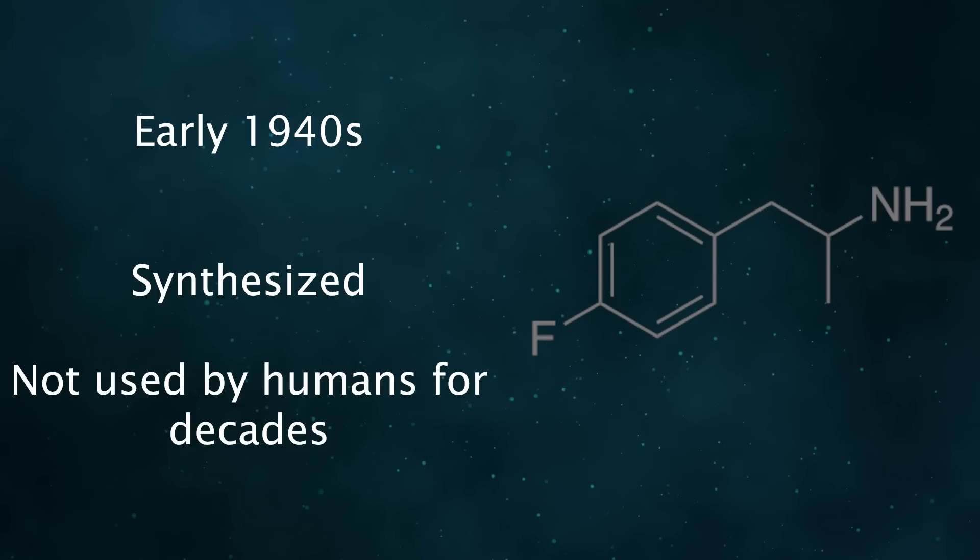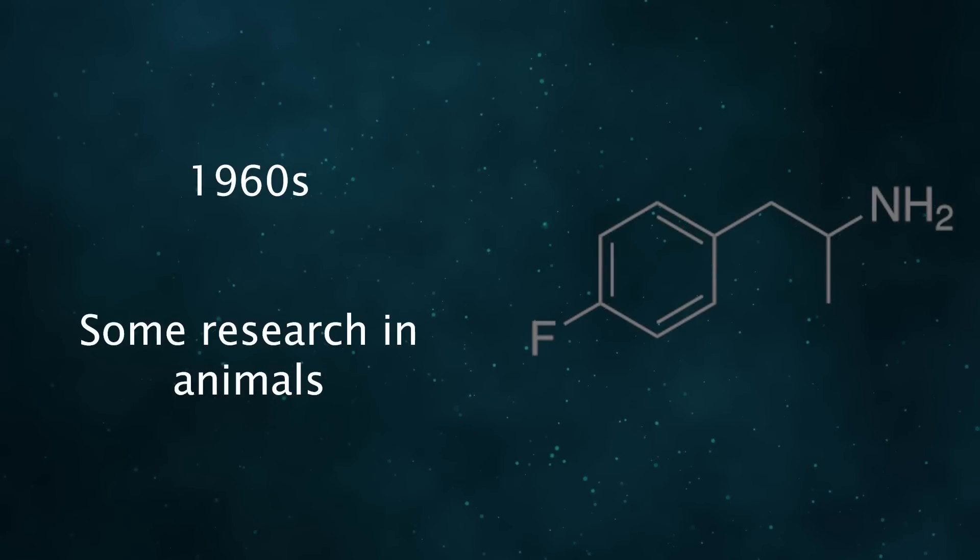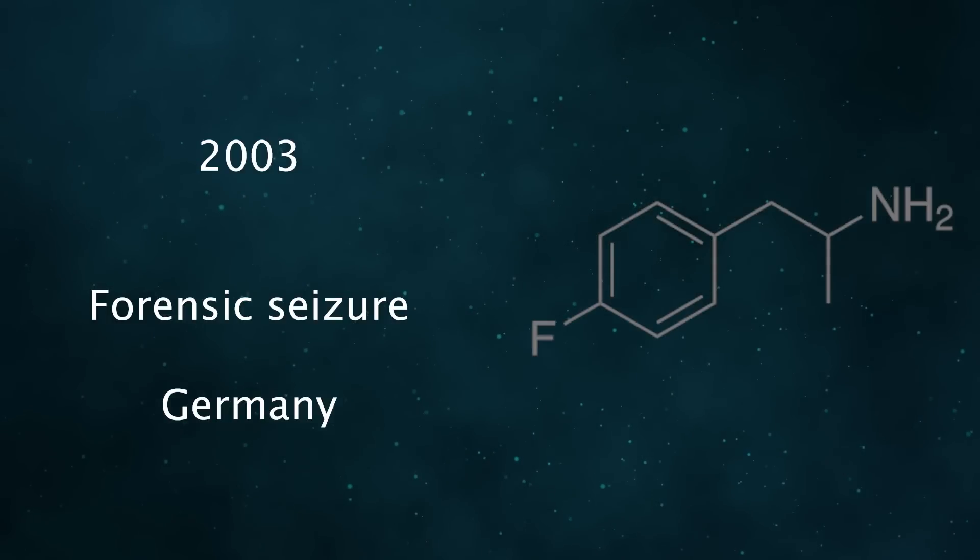The drug was synthesized in the early 1940s, but it wasn't used by humans until many decades later. Some studies in animals began by the 1960s, with 4-FA and other 4-substitute amphetamines being investigated. It was reportedly found in a forensic seizure for the first time in Germany in 2003.